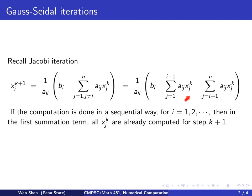this term here, all the xj values are actually already computed for step k plus 1.